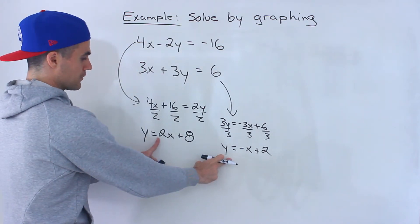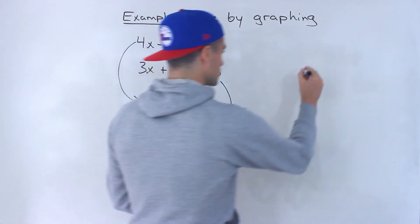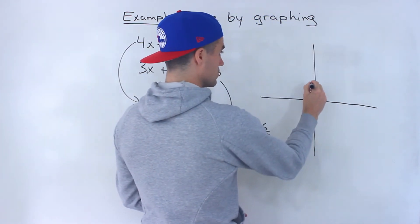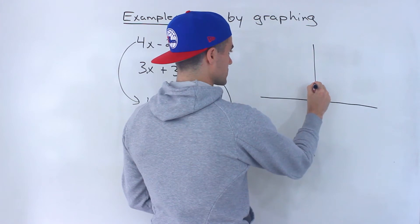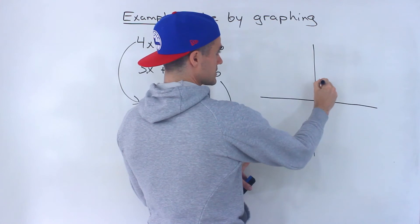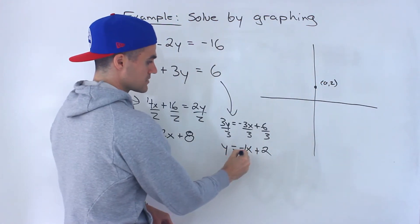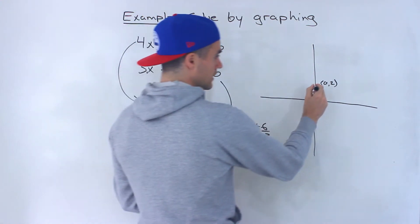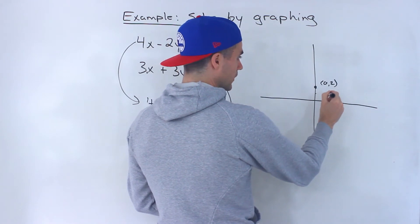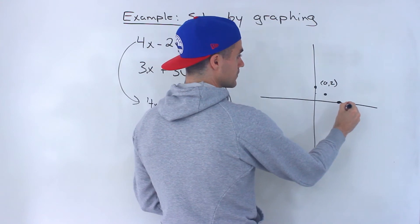Now we can graph both of these lines. Let's start with y equals negative x plus 2. So let's graph a couple of points. The y-intercept is 2, so we have the point (0, 2). Notice that this is a slope of negative 1 — like negative 1 over 1. So if we go down by 1 and run by 1, this point would be (1, 1), and continuing that pattern, this here would be (2, 0).